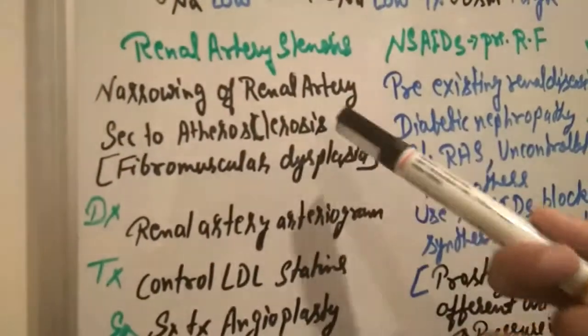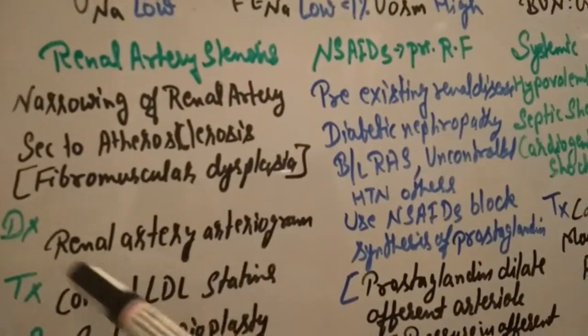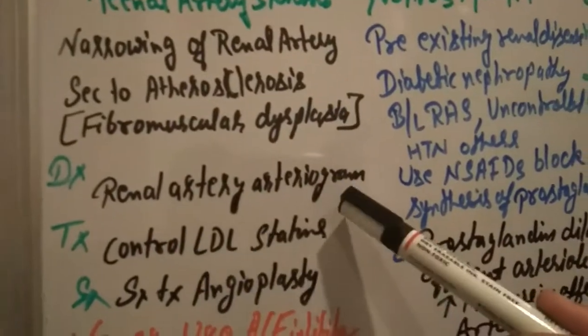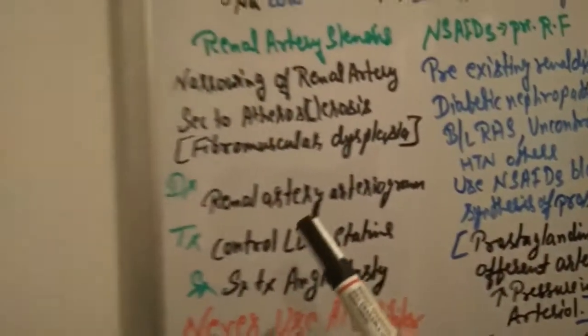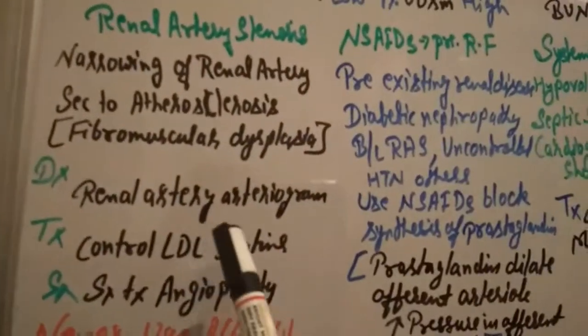Sometimes this artery blocks and not functioning properly and not enough blood supply to the kidney. That's why pre-renal failure occurs. How to diagnose this? Diagnosed with a renal artery arteriogram. It's the ideal definitive diagnosis, but we can see creatinine increases.